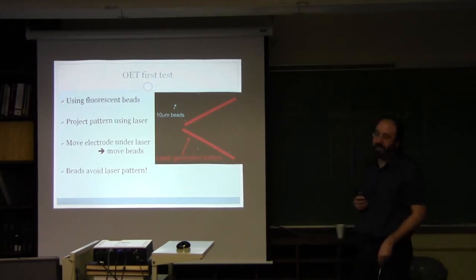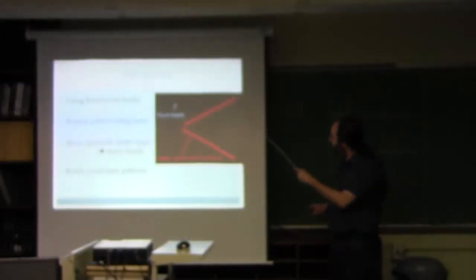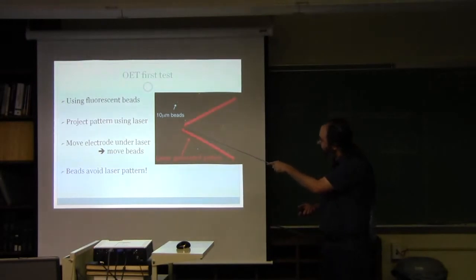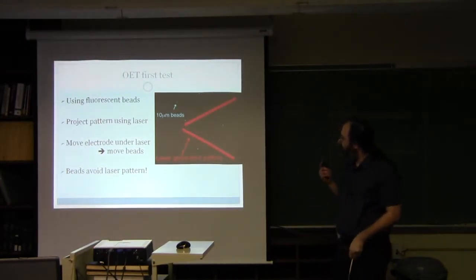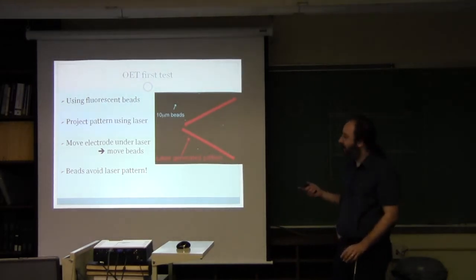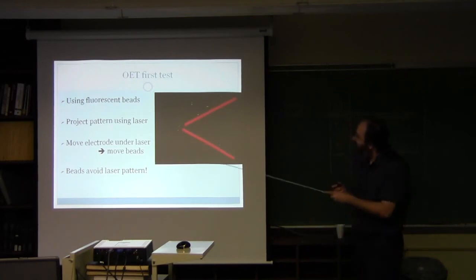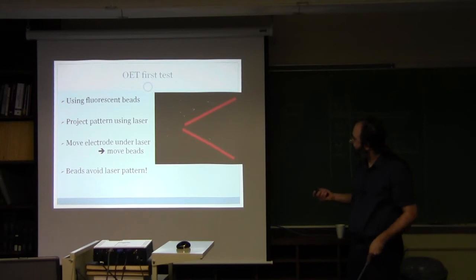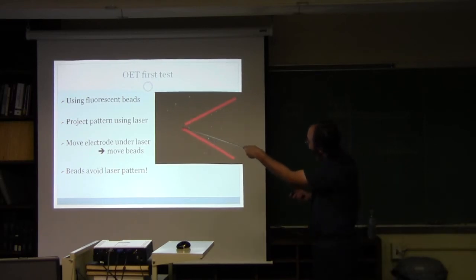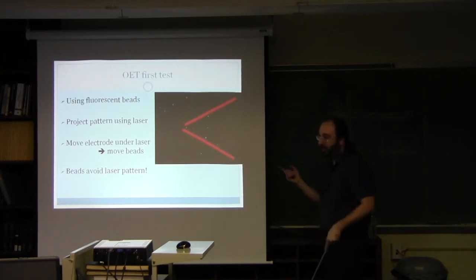This is the first test that we did probably a couple of years ago now. We used the laser from the multi-photon system to just draw this almost V pattern with a little opening here. The blue spots are fluorescent beads, 10 micron beads, in the liquid. We used the stage to just move them across the pattern. You can see that the beads avoid the illuminated region. You can easily imagine having a microbeam here and shooting these cells as they flow through one by one.